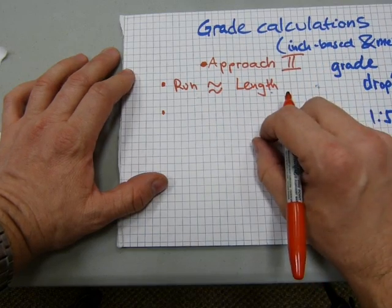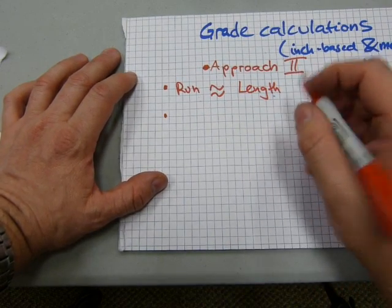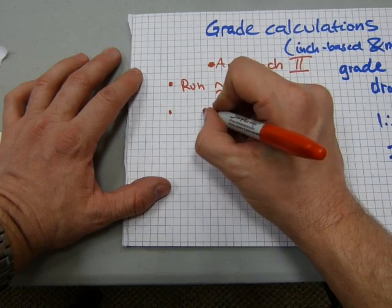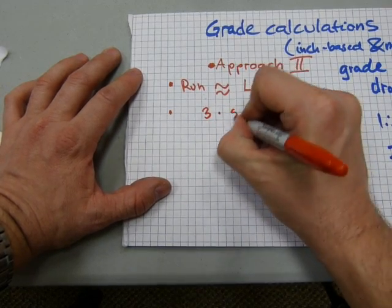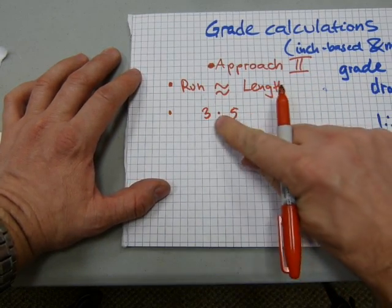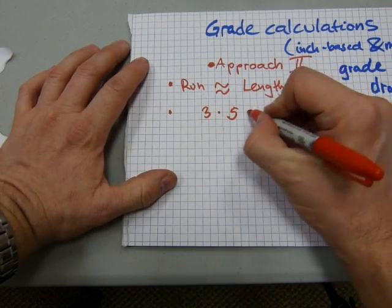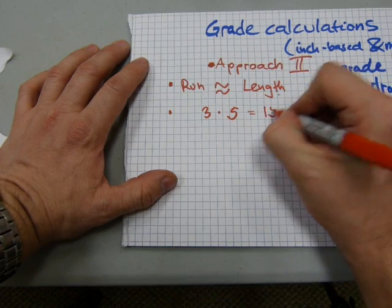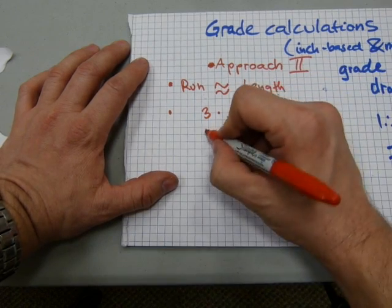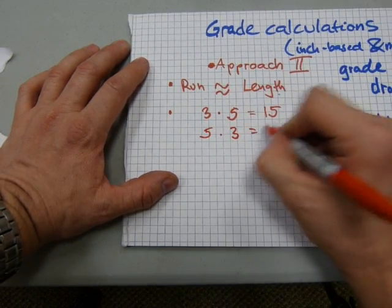It's going to be a multiplication fact family and a division fact family. So, let me illustrate. Say, 3 times 5, and I'm intentionally using the dot for multiplication as it is in algebra, because we're going to be doing some algebra here. So, 3 times 5 is 15, just as 5 times 3 is 15. So, that's a multiplication fact family.